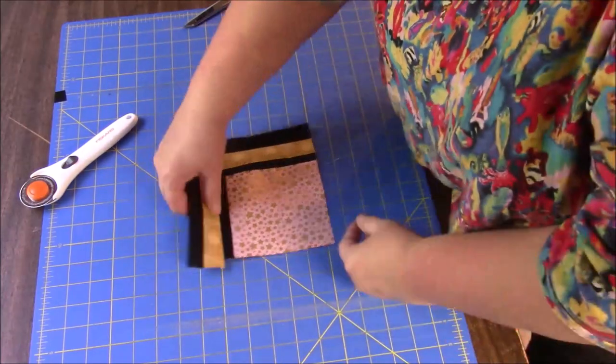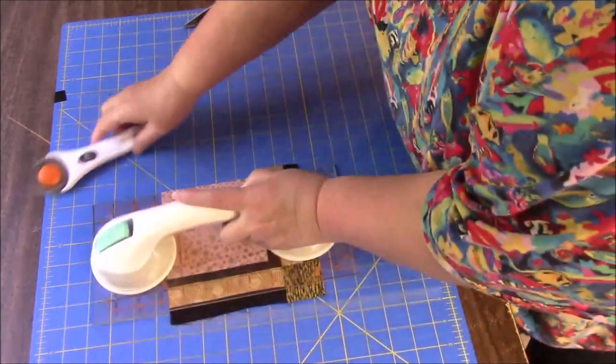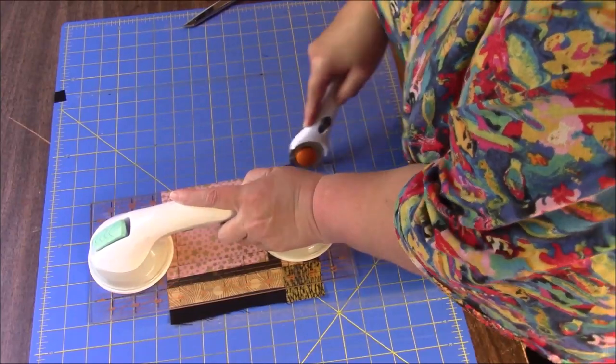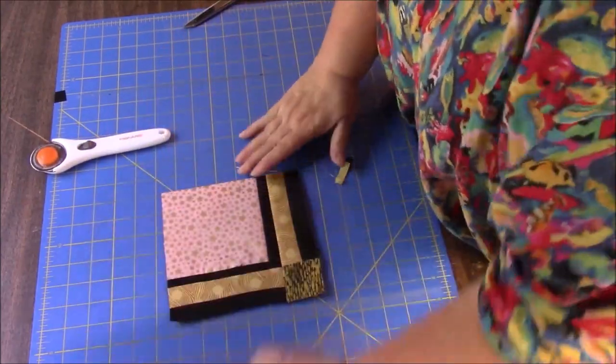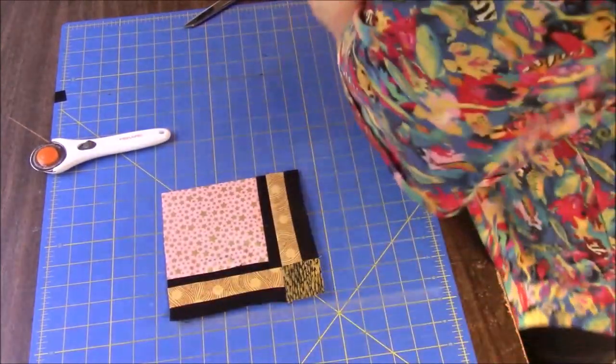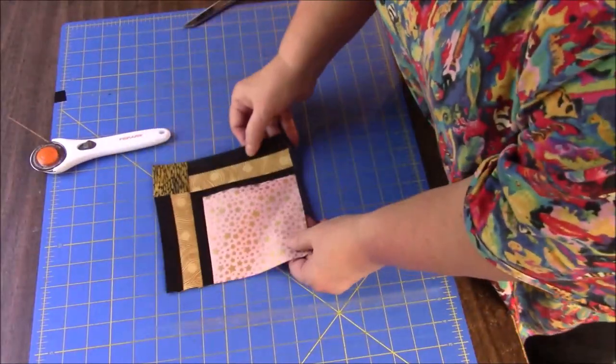This is what we have. I just need to trim right here. This block, I just love it so much. I love the black and the pink and the gold. And let's say it's this way.